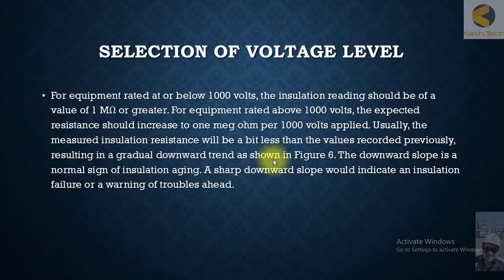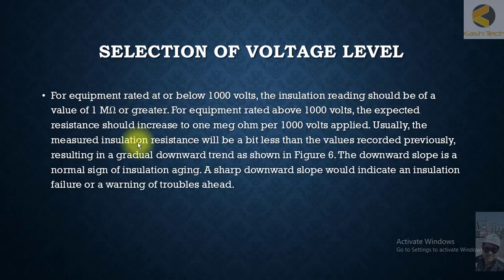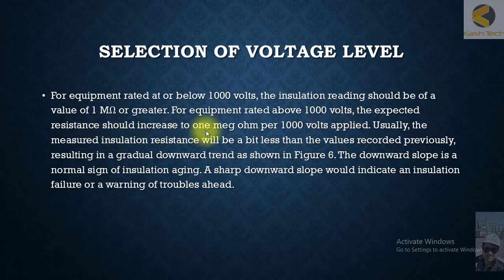We will discuss selection of voltages for maintenance testing. For equipment rated at or below 1 kV, the insulation reading should be 1 megaohm or greater. For equipment rated above 1000 volts, the expected resistance should increase to 1 megaohm per 1000 applied volts.